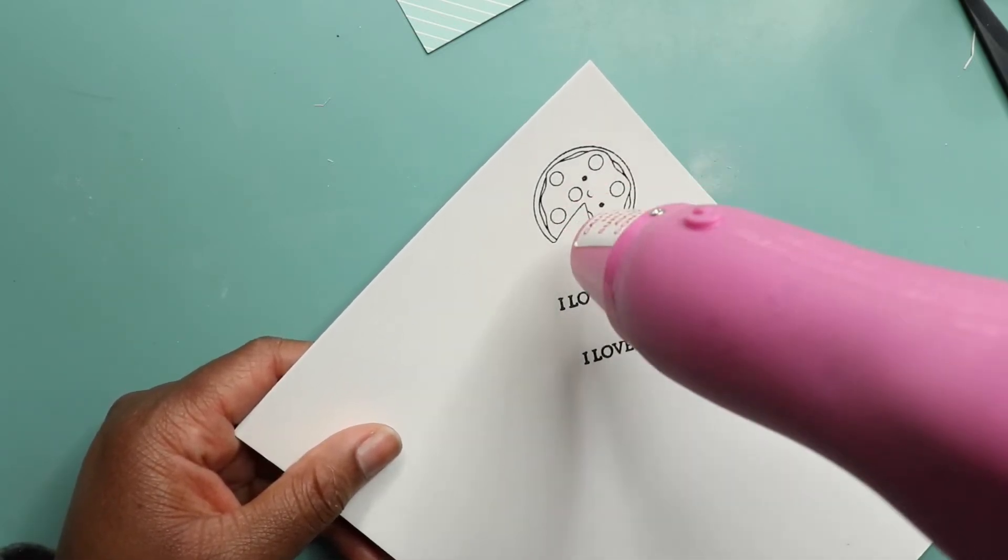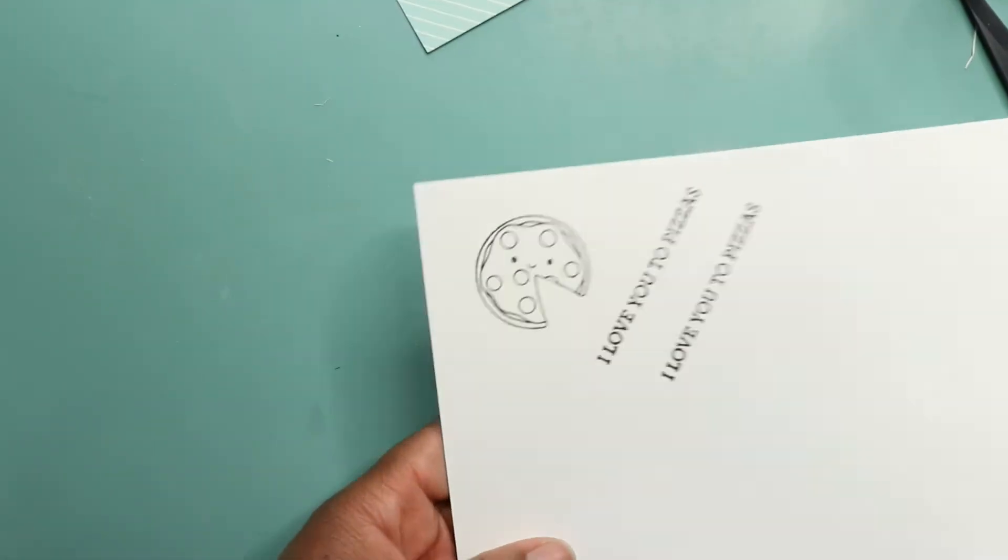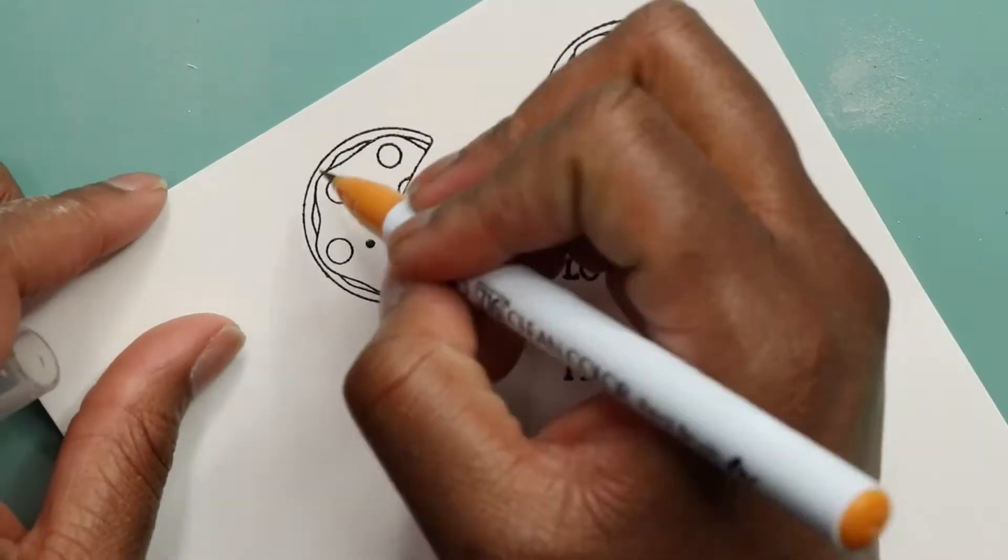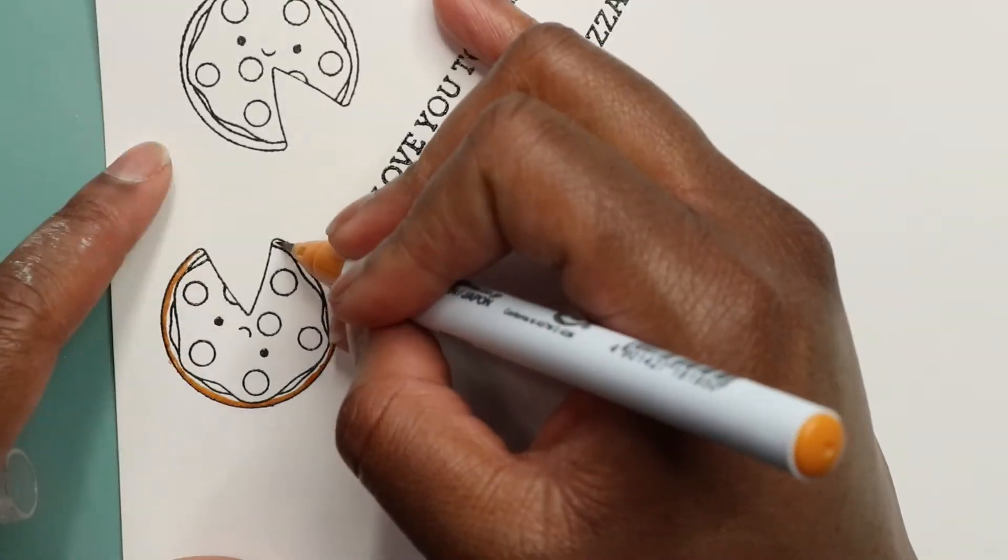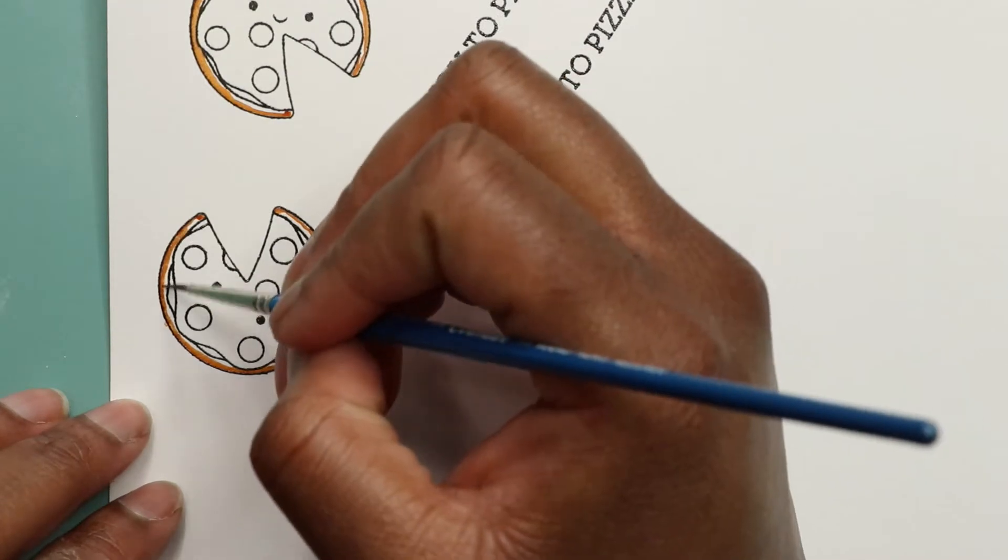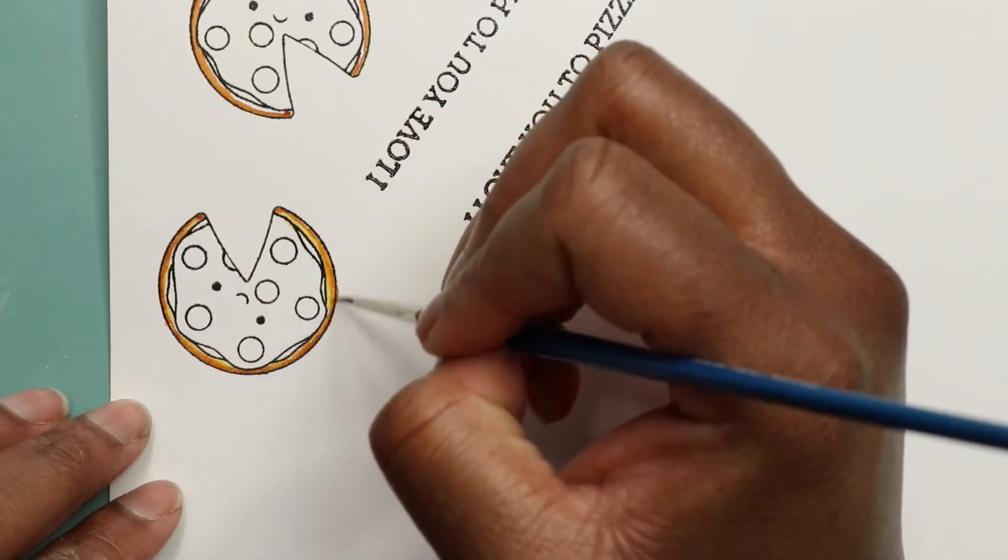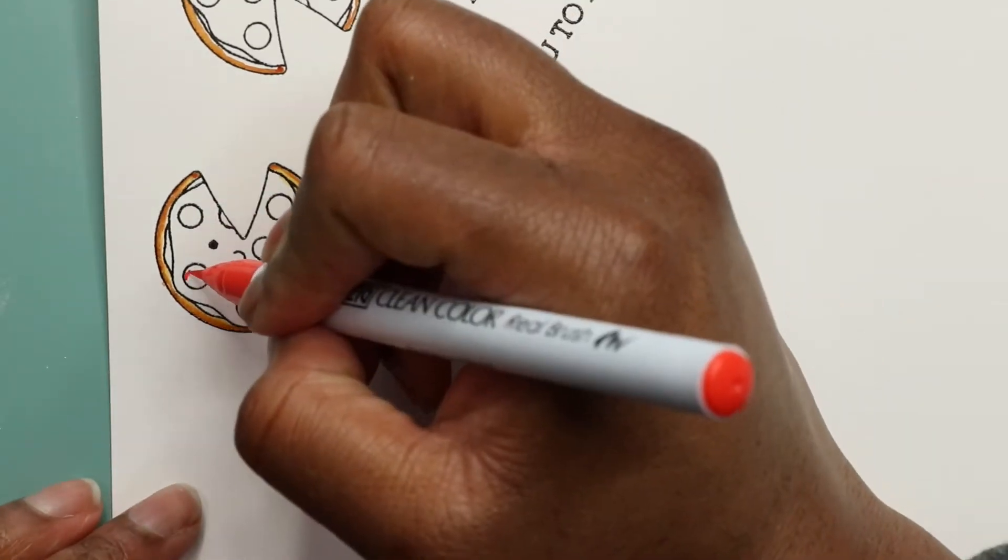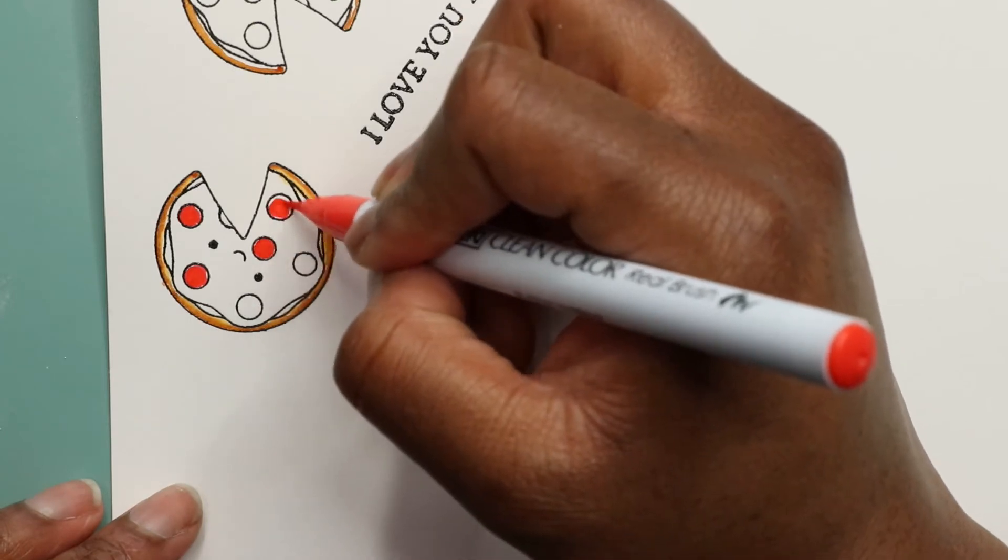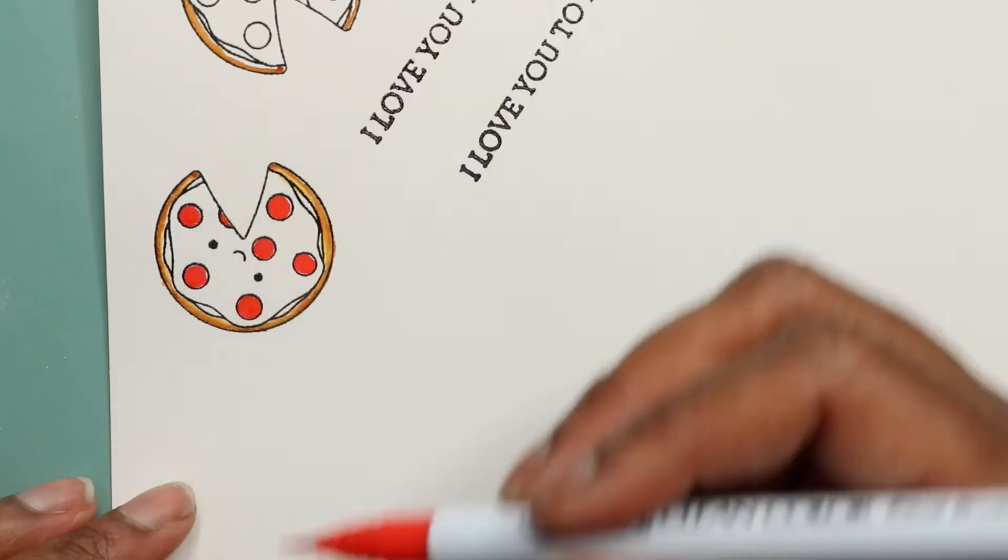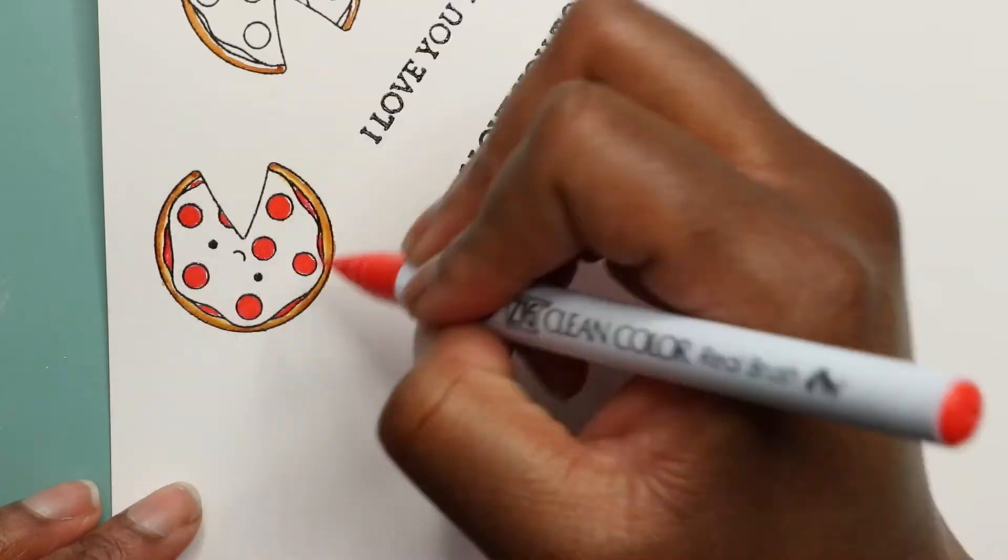I'm going to use my Zig Clean Color brushes to add some color to my stamped images. For my pizza crust, I'm just going around the edge - these were really small images so I had to be careful. I left a little bit of color and then took a fine brush that was damp with just a little bit of water and blended it out to give it dimension. For the pepperoni and the sauce, I just straight colored it in with the red Zig marker.